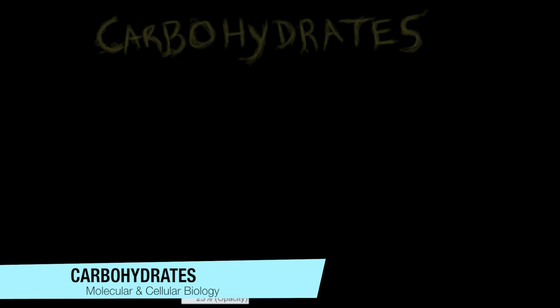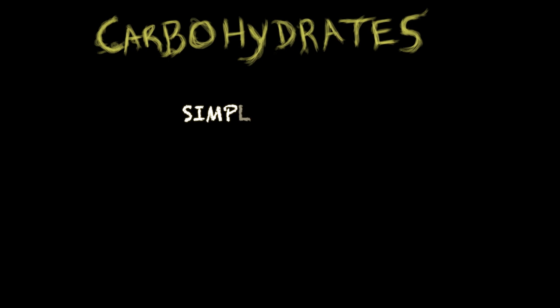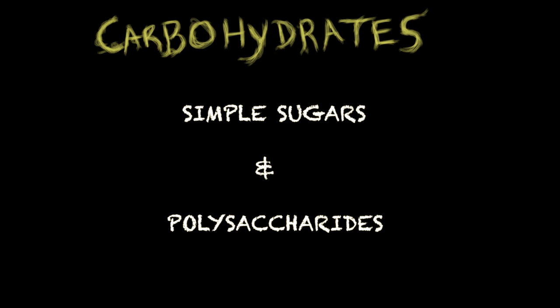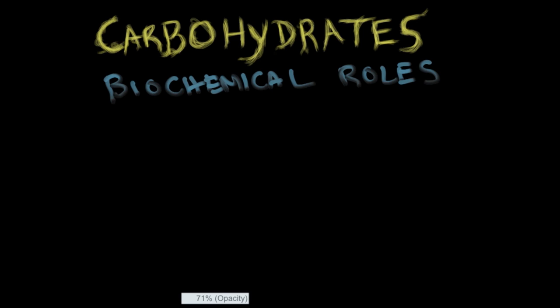This is Juan from Salmonella Place and today we're going to talk about sugars, or in other words, carbohydrates. Carbohydrates can be divided into simple sugars and polysaccharides, and we're going to see that. But the first thing I want to discuss is the importance of this group of organic molecules — their biochemical roles.